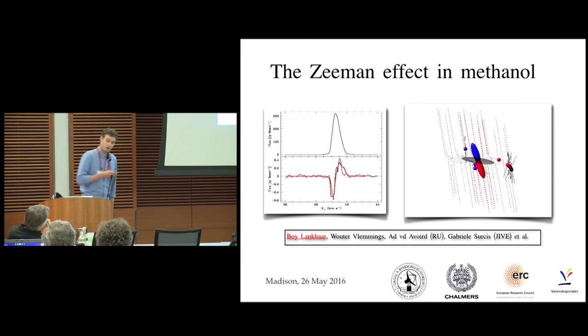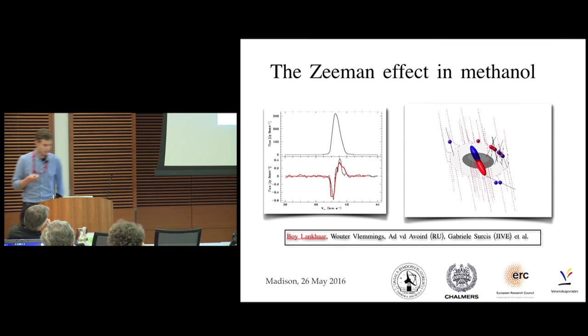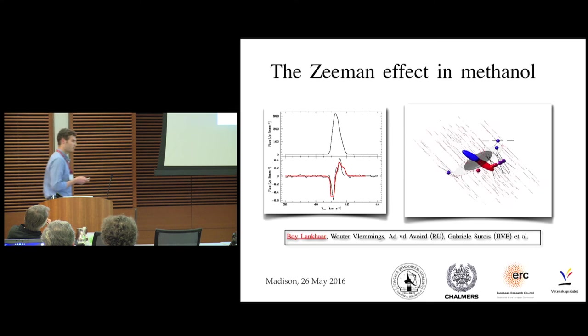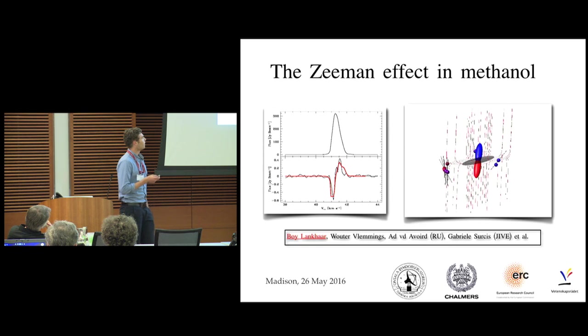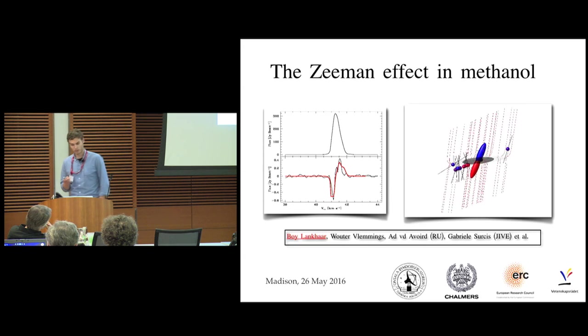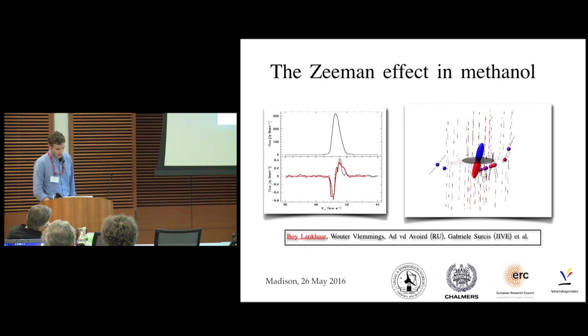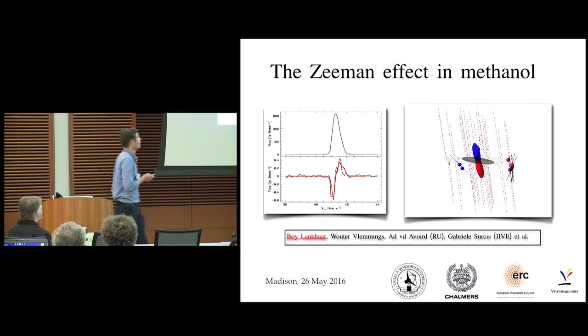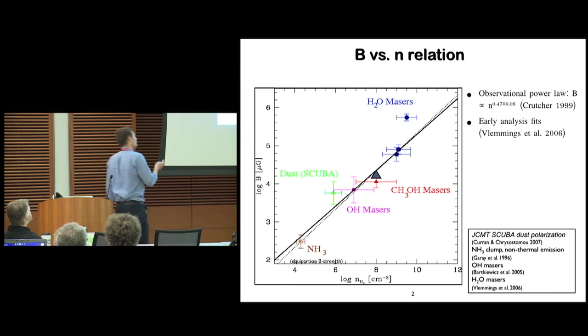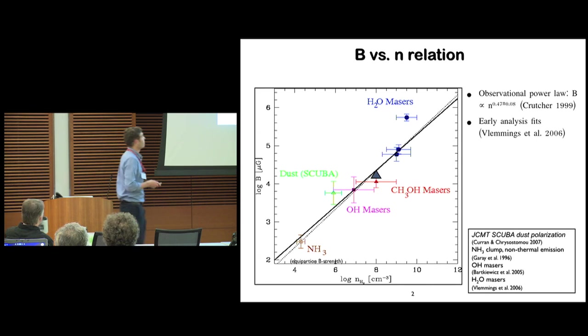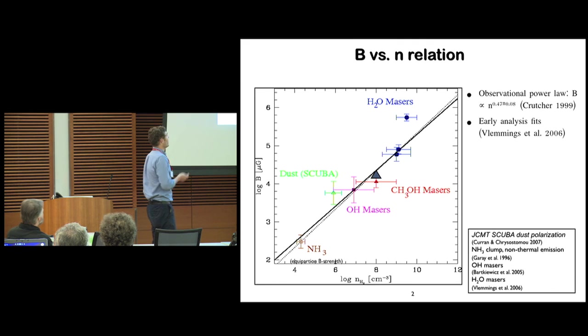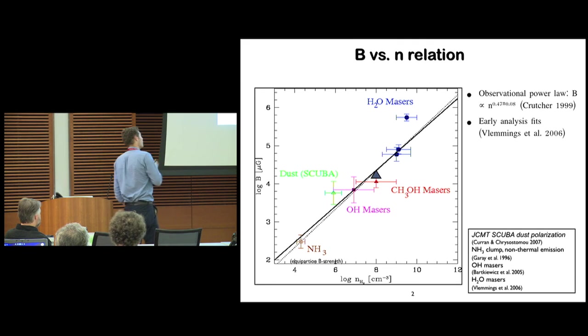But the current analysis of the Zeeman measurements of Methanol doesn't include the hyperfine structure of Methanol, and has very old data on the actual Zeeman effect, on the Zeeman parameters of Methanol. And in the beginning, I'm showing you here the now famous number density against magnetic field strength relation. As you can see, the Methanol masers magnetic fields are right on the spot, right where you would expect them.